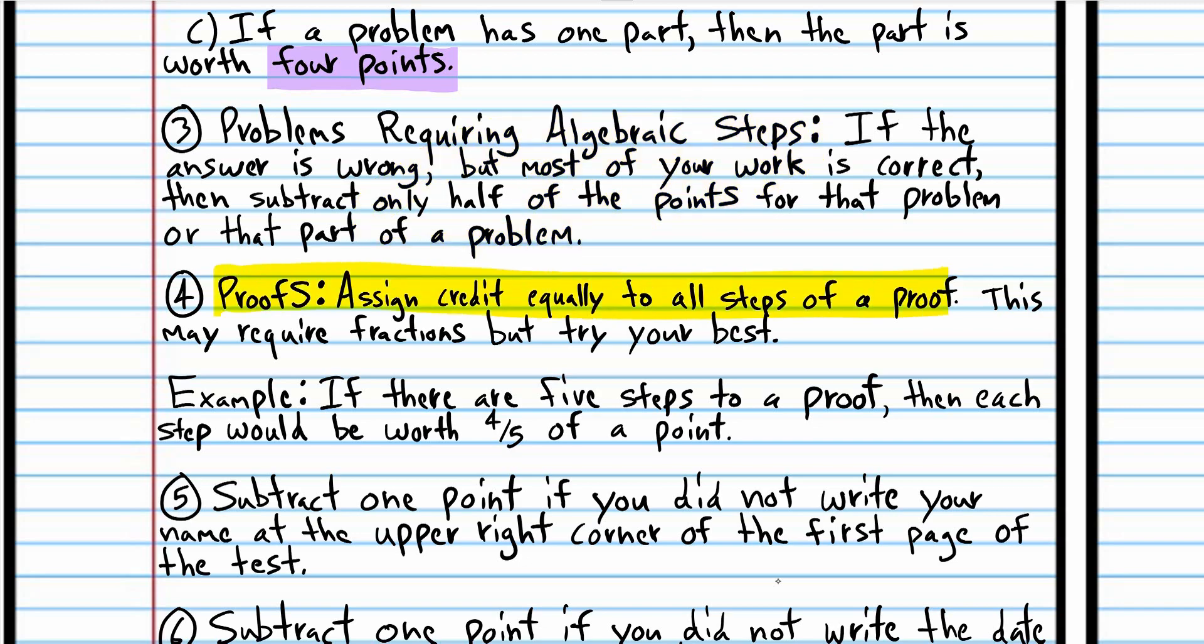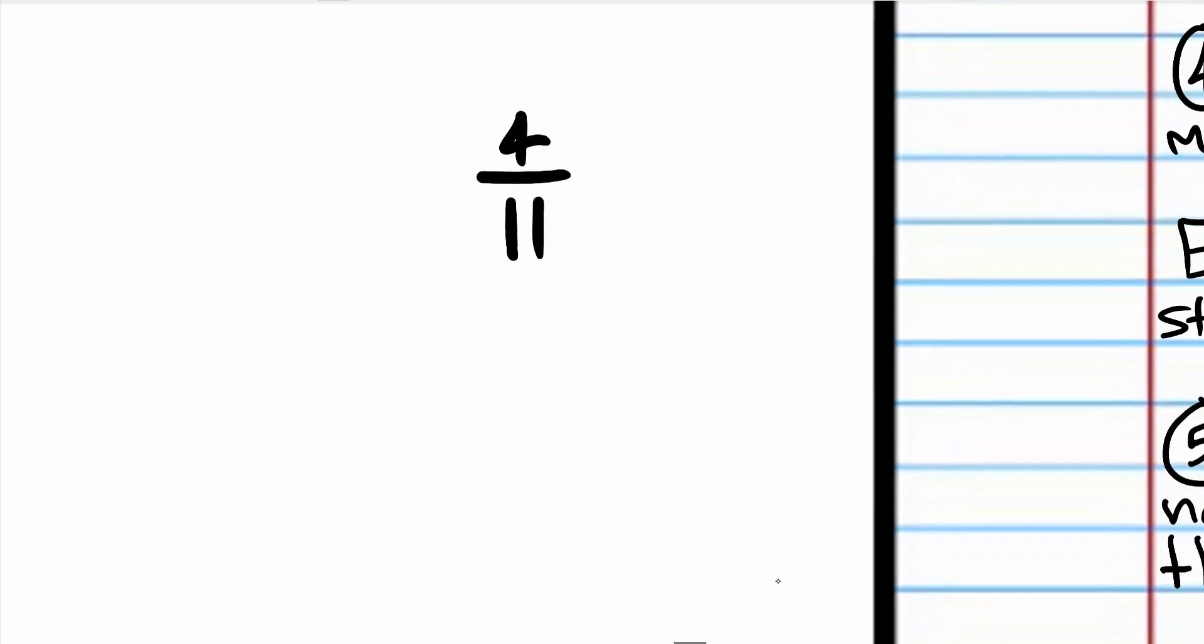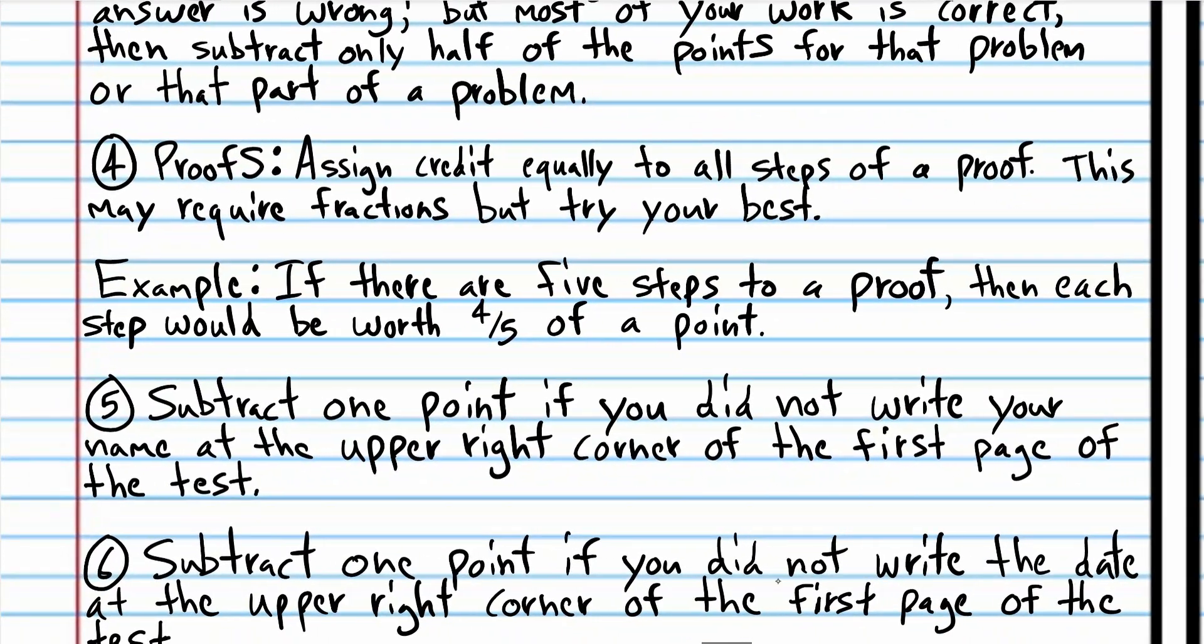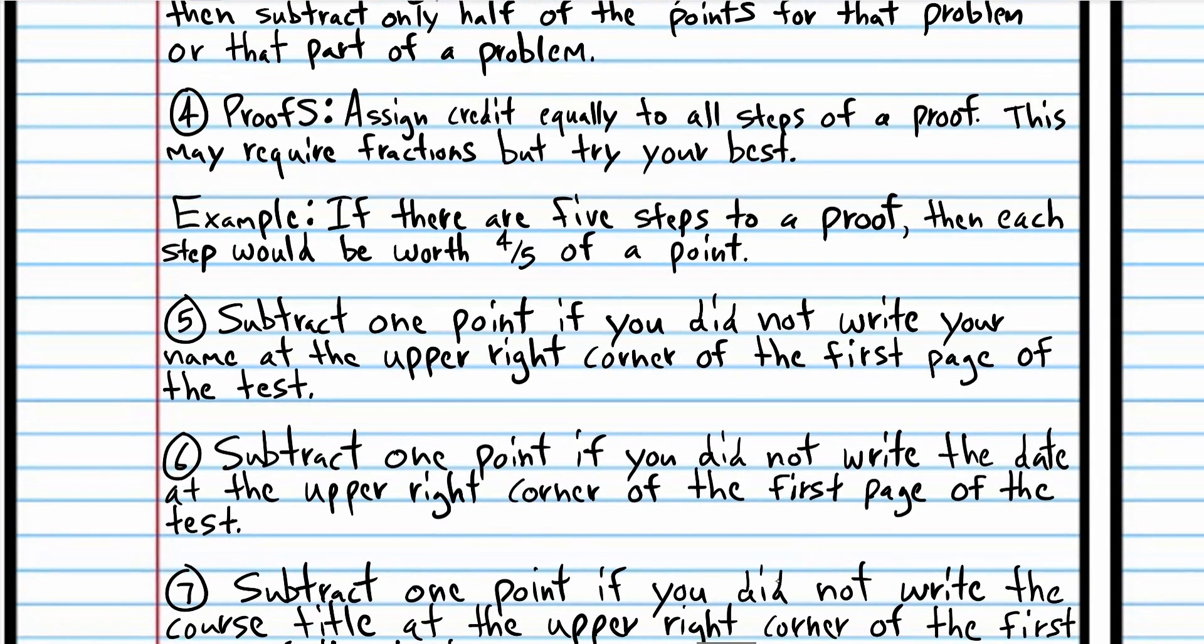When it comes to the proofs, I want you to assign credit equally to all the steps of the proof. So, for example, if there are five steps to a proof, each step would be worth four-fifths of a point. Now, I know that that is going to make things a little difficult, but just try your best. For example, if there are 11 parts to a proof, then each part would be worth four-elevenths. If there are three parts to a proof, then each part would be worth four-thirds. Again, I know that that makes things a little difficult with the fractions. If you don't want to use all those fractions, then just try your best to assign points based on what you think you understood in the proof. If you understood about half of the proof, then give yourself half credit. So, that's the basic idea.